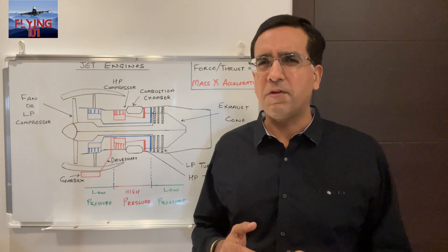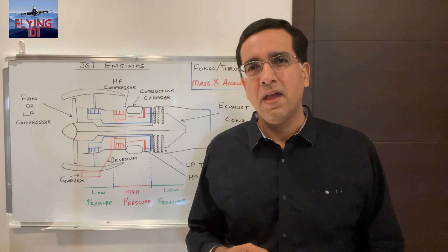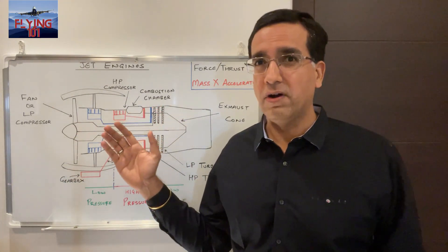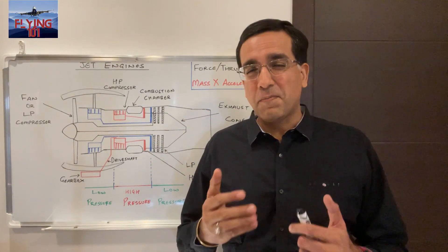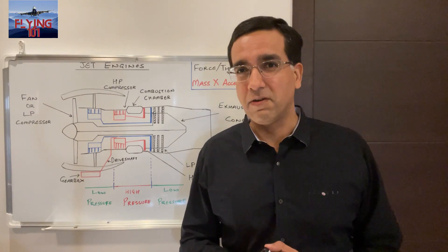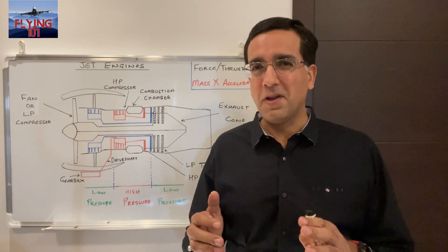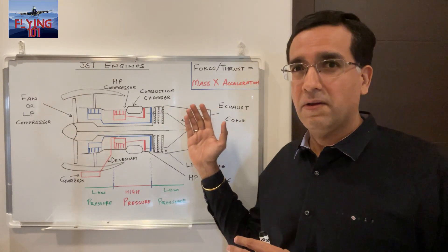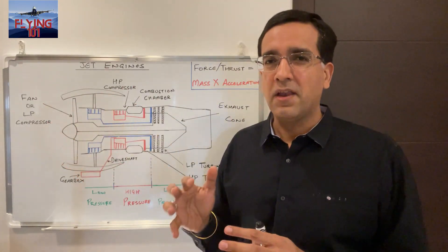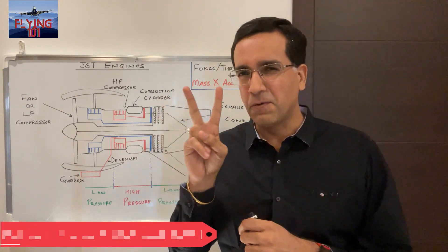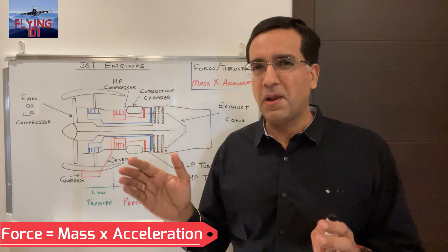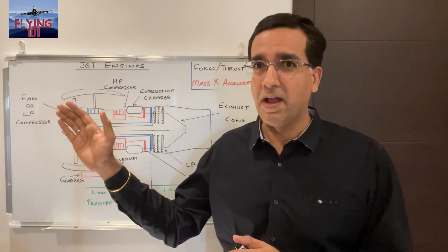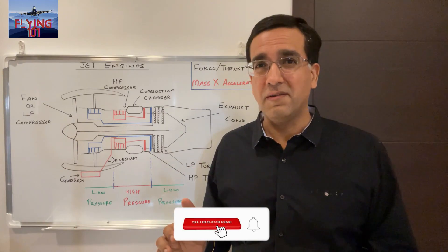Jet engines are gas turbines and they have come a long way since they were first built many decades ago. Simply stated, jet propulsion can be described as a force that is generated in the opposite direction to the flow of gas under pressure which is escaping through an opening or the exhaust. This principle is governed by Newton's third law of motion which states that for every force acting on a body there is an equal and opposite reaction. The principle of the gas turbine engine is that it propels a mass of air backward which generates an equal forward force. Force or thrust is a function of mass times acceleration, and the force created by the mass of air and its velocity drives the aircraft forwards.